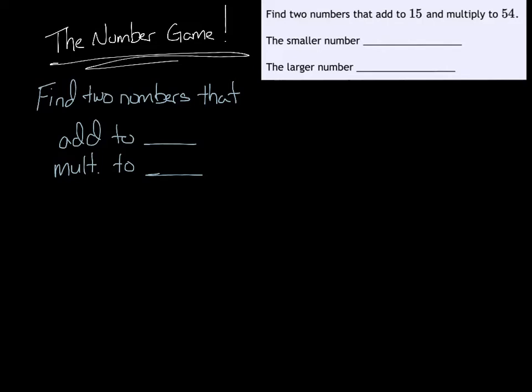In this first example, we're looking for two numbers that add to be 15 and multiply to be 54. There's some important things to recognize from this information.